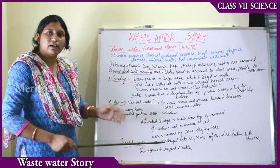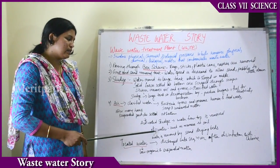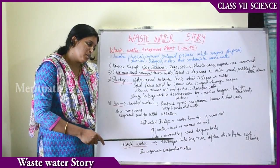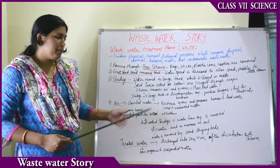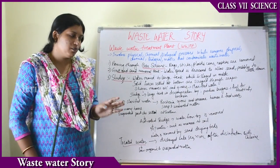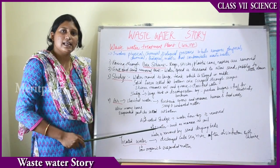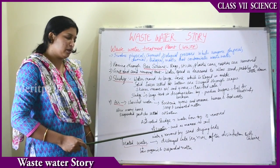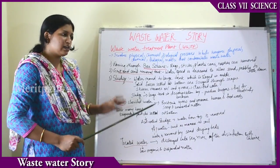The activated sludge is made up of 97% water. The water is removed from the activated sludge through sand drying beds or machinery beds. The remaining dry part can be used as manure for the soil because it is bacteria-rich and nutrient-rich.